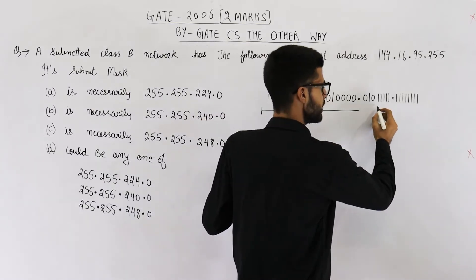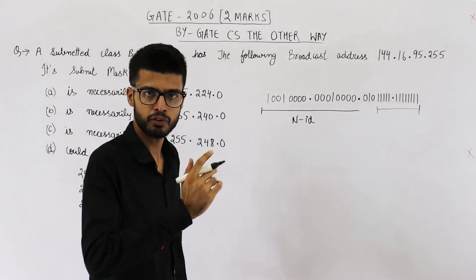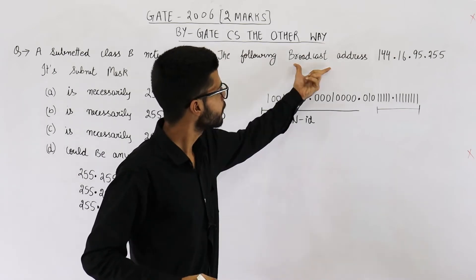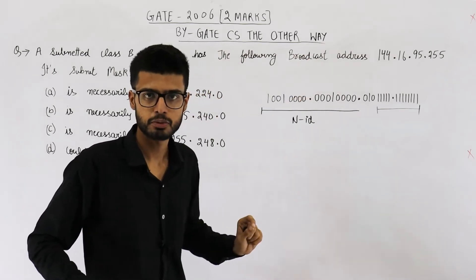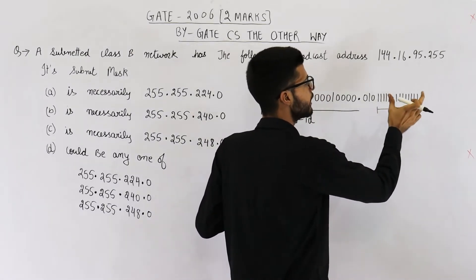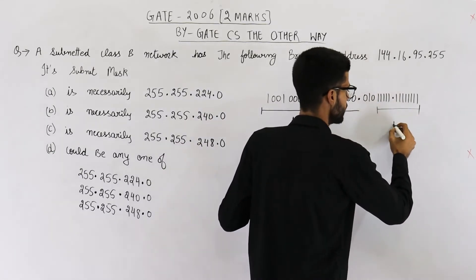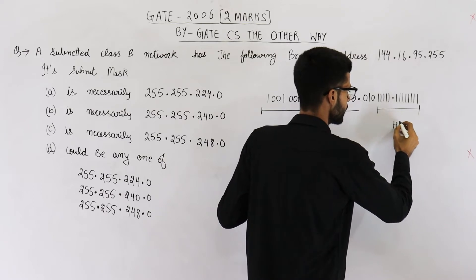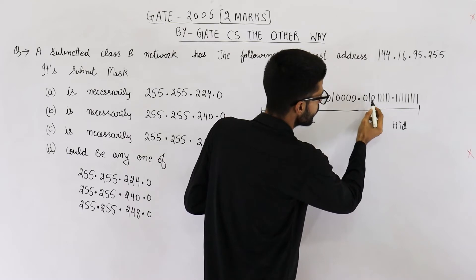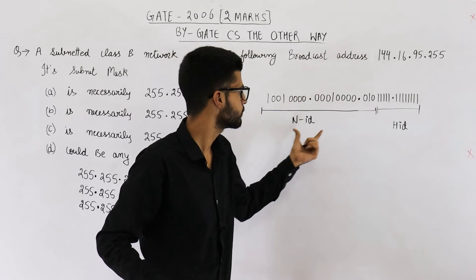In a broadcast address, all the host ID bits will be one. So prima facie it seems that the last part will be the host ID — first because host ID is on the right-hand side, and second because it is a broadcast address, so all those bits must be high. All of these bits are continuous, on the right side, and they are high, so it might seem as if this is the host ID. If this is the host ID, that means these three bits — 0, 1, 0 — have been borrowed.